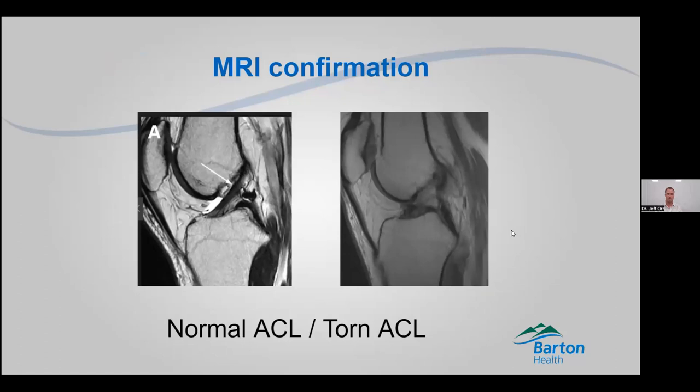Here's an MRI — this is a sagittal view, or a view from the side. You can see your femur up top, tibia down below, your patella over on the side — that's the front of the knee. On the left MRI, you can see an intact ACL going from the back of the femur to the front of the tibia — a nice dark line. Over on the right side, that is completely absent — you don't see it. So that's a torn ACL, which confirms what we see on examination.